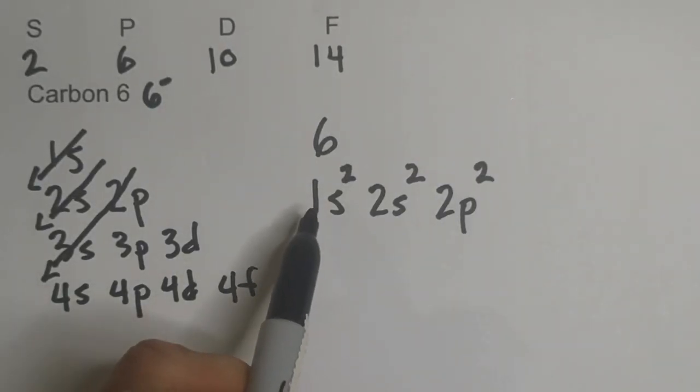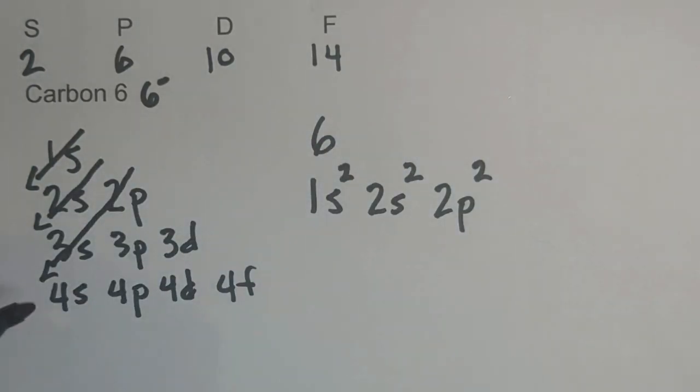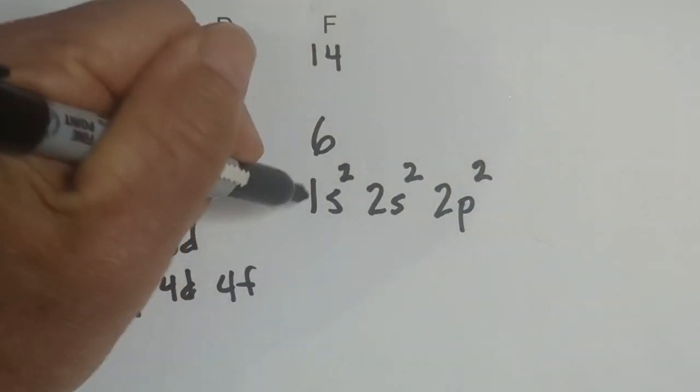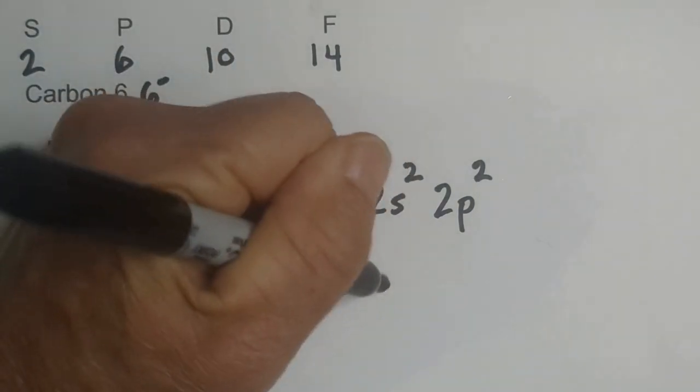So at ground state it looks like this. Now if you need to know how many electrons are in each energy level, we know energy level 1 we're going to have 2, energy level 2 we're going to have 4.